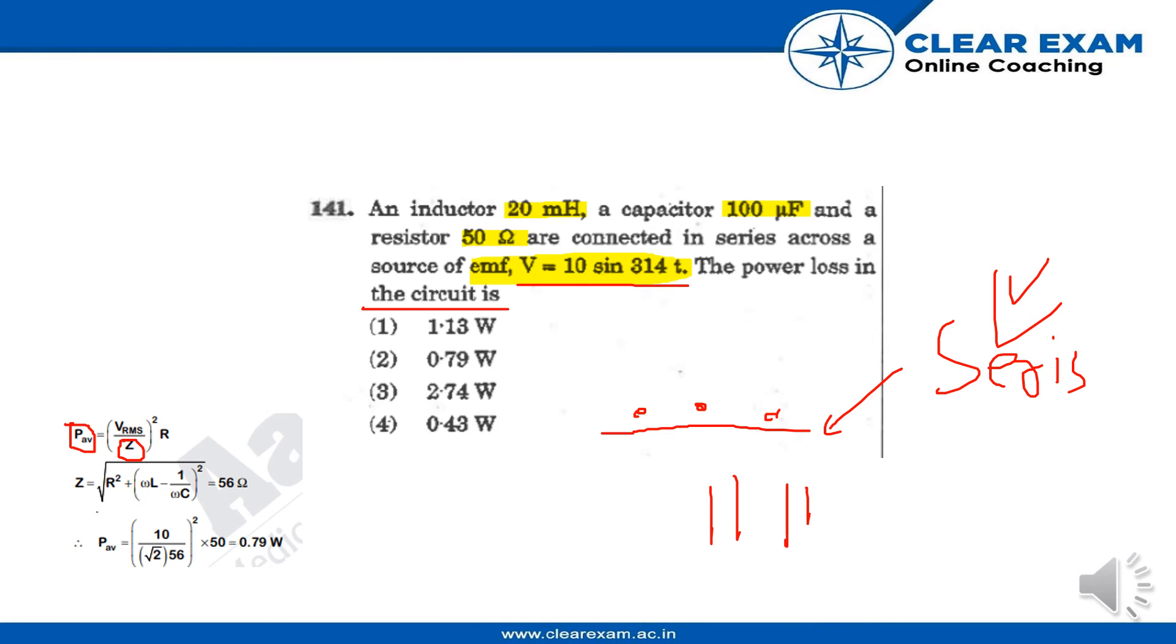For power loss, we will apply the value of Z. Z = √(R² + (ωL - 1/ωC)²). From that we can find the value of Z as 56 Ω.